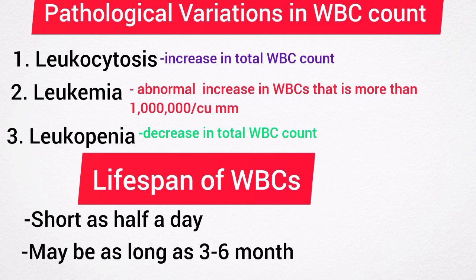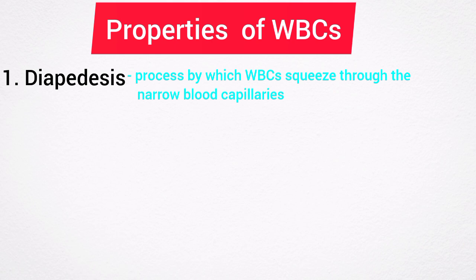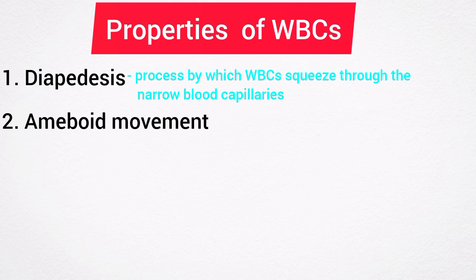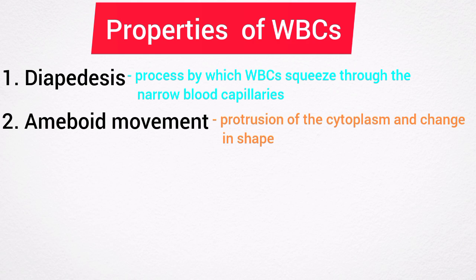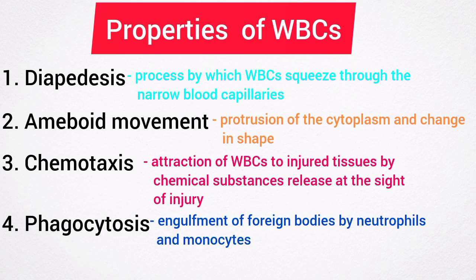The properties of white blood cells include: number one, diapedesis — the process by which leukocytes squeeze through narrow blood vessels. Number two, amoeboid movements — neutrophils, monocytes, and lymphocytes show amoeboid movements characterized by protrusion of the cytoplasm and change in shape. Number three, chemotaxis — the attraction of white blood cells towards injured tissues by chemical substances released at the site of injury. Number four, phagocytosis — neutrophils and monocytes engulf foreign bodies by means of phagocytosis.